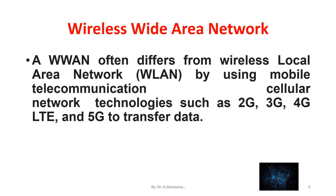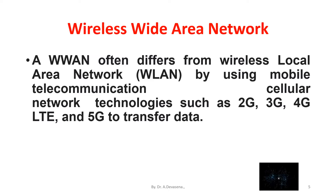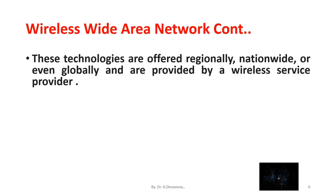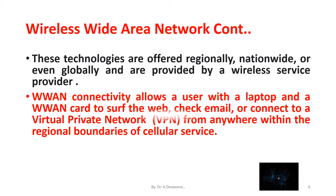WWAN often differs from wireless local area network by using mobile telecommunications cellular network technologies such as 2G, 3G, 4G LTE — that is long term evolution — and 5G to transfer data. It is sometimes referred to as mobile broadband. These technologies are offered regionally, nationwide, or even globally and are provided by a wireless service provider.